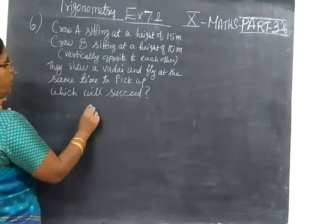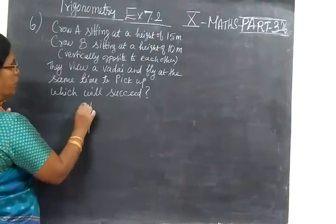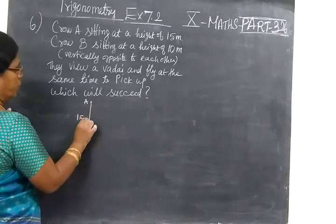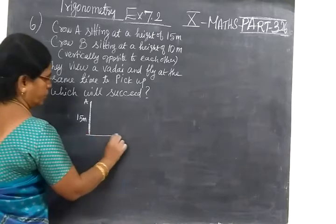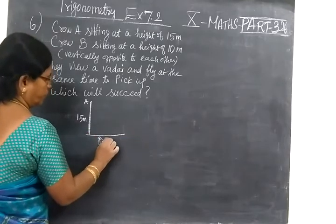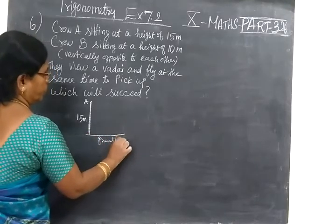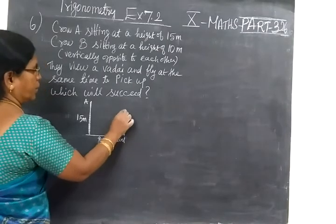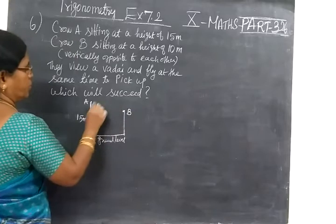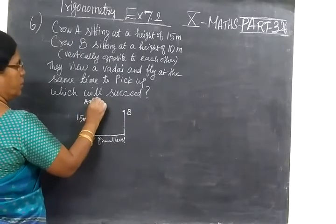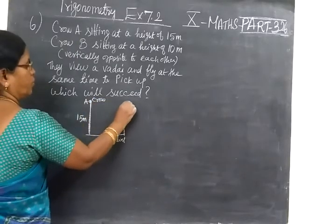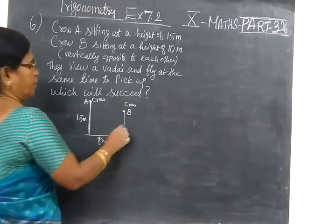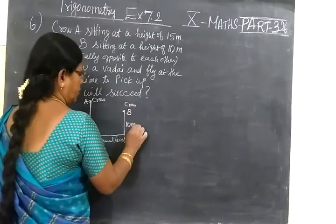Crow A is sitting at a height of 15 meters from the ground on a tree. This is ground level. Crow B is sitting on another tree. They are just opposite to each other. This is Crow A and this is Crow B. This is 15 meters and 10 meters.